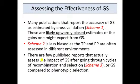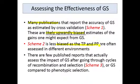Many publications use scheme one, cross-validation, to report on the accuracy of genomic selection. But the accuracy estimated in this fashion is likely upwardly biased in terms of estimating the gains one might expect, because the training population and prediction population are both evaluated in the same set of environments, so the impact of G by E is not factored in. Scheme two is a less biased estimate because the training and prediction populations are often assessed in different environments, which is more reflective of the realities of plant breeding. There are very few published reports that assess the impact of genomic selection after going through cycles of recombination and selection, as assessed in scheme three, or that look at genomic selection compared directly to phenotypic selection.